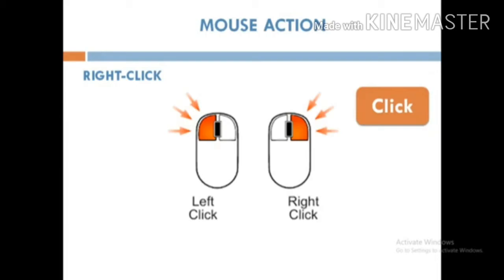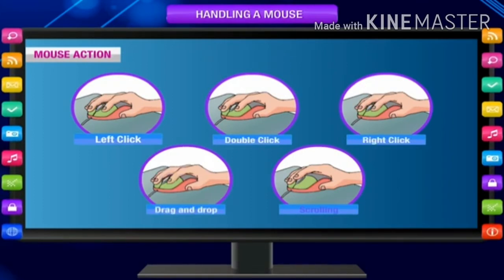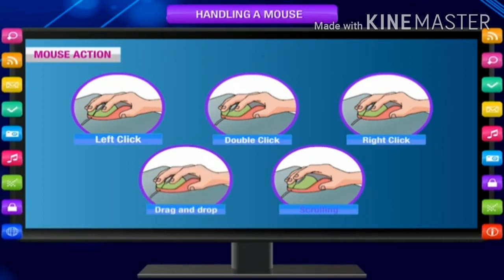Let's revise one more time. Mouse actions. There are five mouse actions: left click, double click, right click, drag and drop, and scrolling.